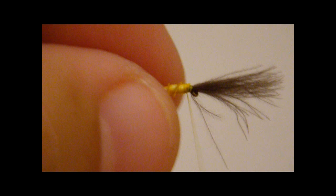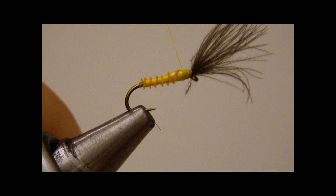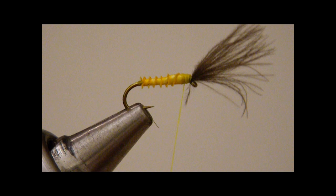And we find that the better fish, and by better fish I mean 16 plus inch fish, they're more apt to take a cripple. It seems like the smaller fish sometimes aren't even really sure what a cripple is, but the better fish...